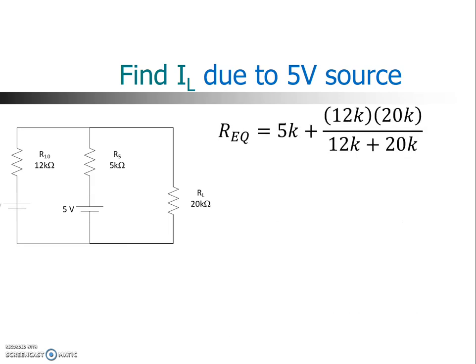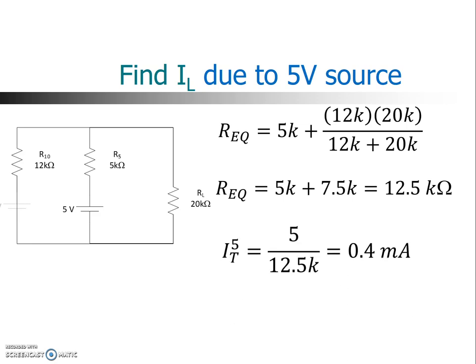So the equivalent resistance is 5K plus product over sum, 12K times 20K over the sum of the two. We get a value of 12.5 kiloohms. Now we use that along with Ohm's Law to find the total current from the 5-volt source. That's 5 divided by 12.5K, or 0.4 milliamp. And just like before, we apply a current divider, 0.4 milliamp times 7.5, which is that 12K parallel 20K, divided by the 20K, which is the one we're interested in, and we get a value of 0.15 milliamps.